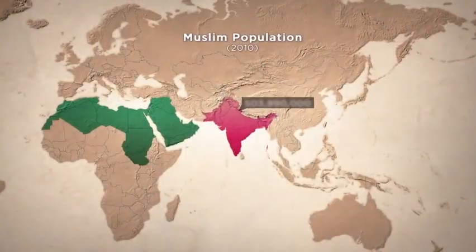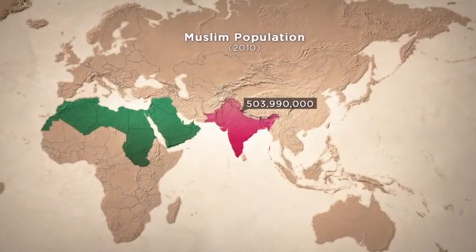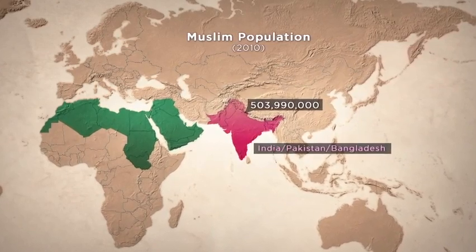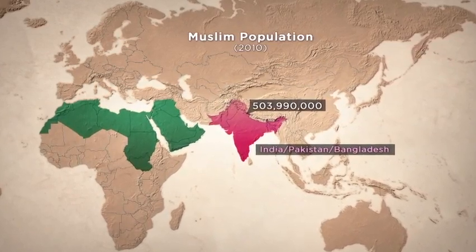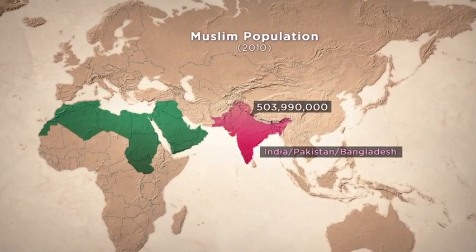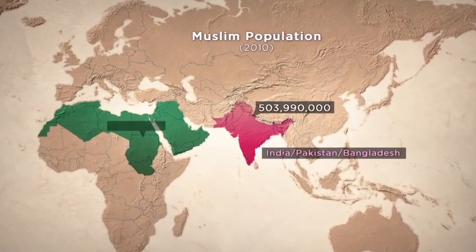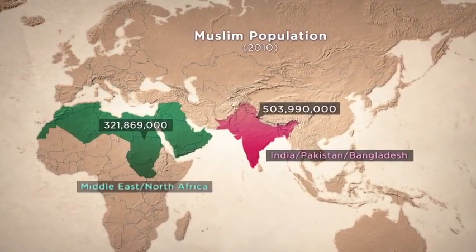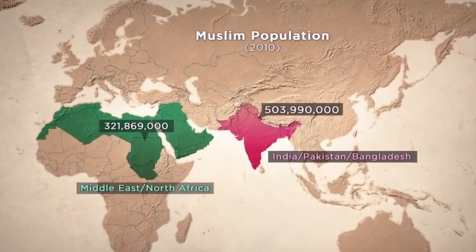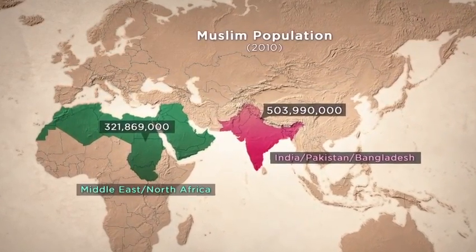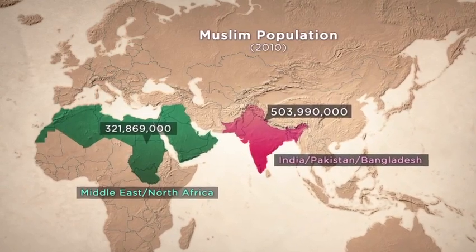South Asia has the largest number of Muslims in the whole world, about a third of the entire total. Indeed, there are over half a billion Muslims in the current nations of Pakistan, India, and Bangladesh. This far exceeds the number of Muslims in the Arabian Peninsula, Egypt, and the rest of North Africa put together.